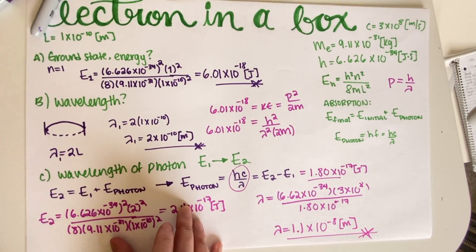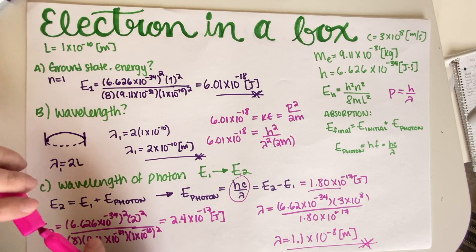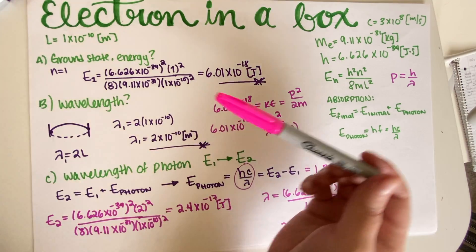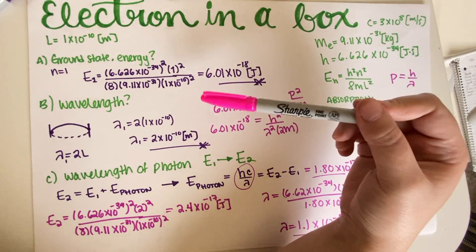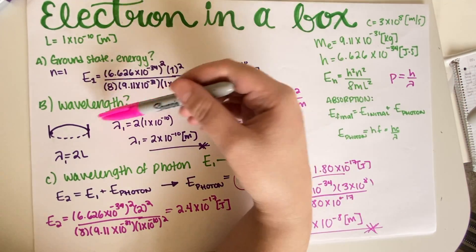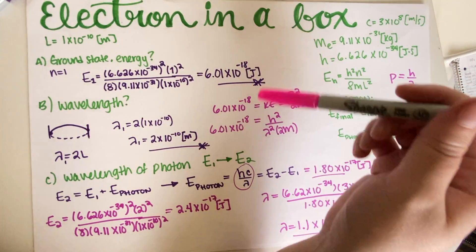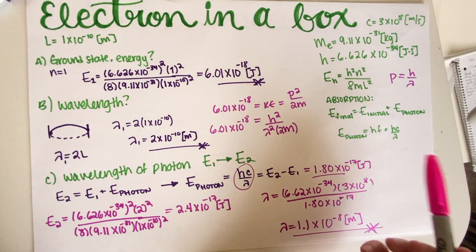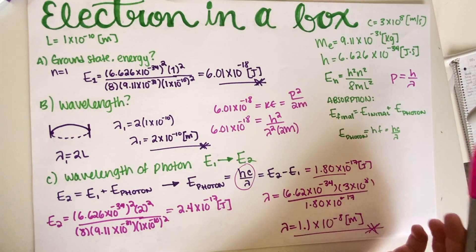So that's my final answer for part C. Other than it being a pain to enter all these numbers into a calculator, this problem was pretty straightforward. You apply the particle-in-a-box definition, use fixed-fixed standing waves or kinetic energy for lambda, and then apply the absorption equation and photon energy definition for part C.